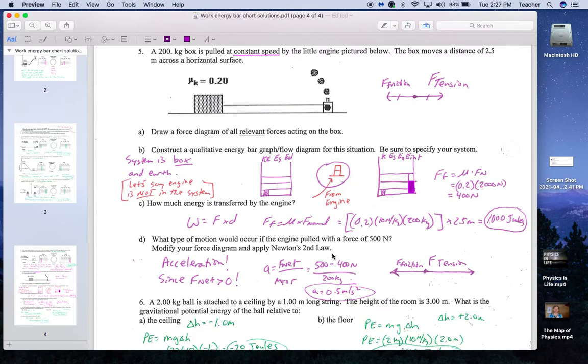What kind of motion would occur if the engine pulled with 500 newtons? Well, if there's 400 newtons of friction, which is equal to 400 newtons of tension here initially, now this goes to 500 newtons, it would actually have an acceleration to the right. I did not ask you to quantify that.